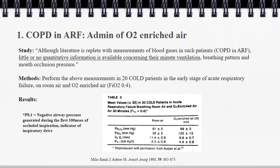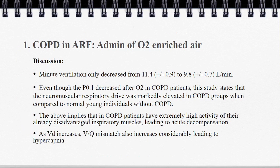They took 20 COPD patients in the early stages of acute respiratory failure and measured their minute ventilation, breathing pattern, and mouth occlusion pressure on room air and then again after 30 minutes of receiving FiO2 40% O2. P0.1, the mouth occlusion pressure, is essentially an indicator of inspiratory drive. The results show the arterial CO2 increased from 61 to 68, oxygen increased, but the minute ventilation only went from 11.4 to 9.8 — with overlapping margins of error — and the mouth occlusion pressure went from 8 to 4.